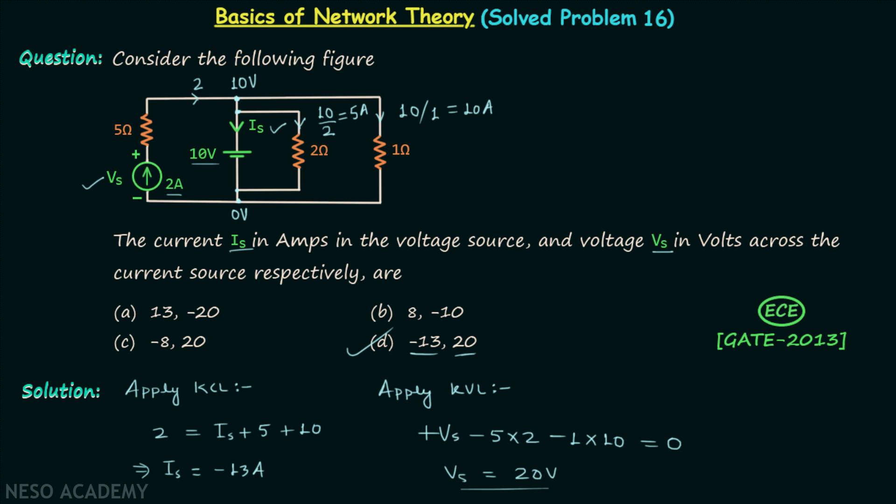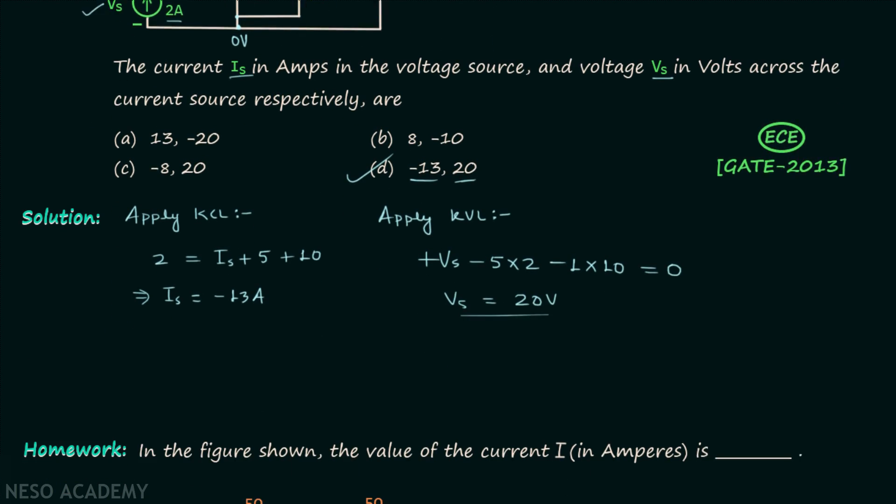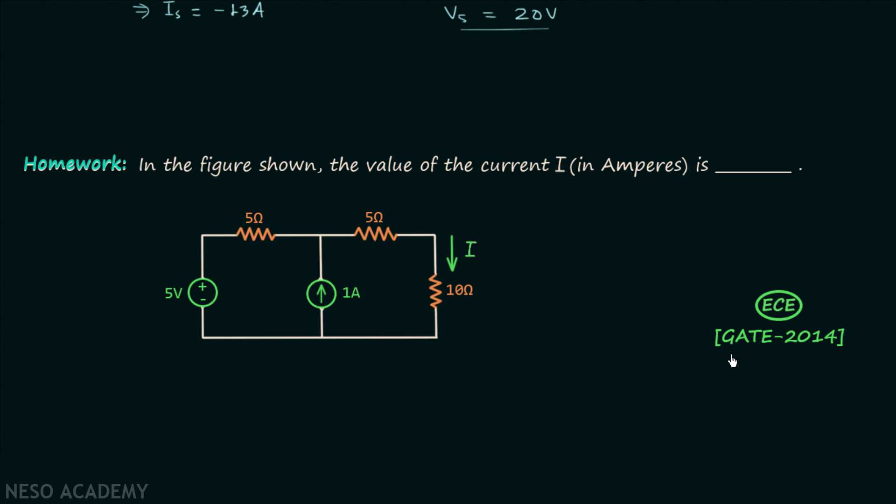Now we will move on to our homework problem which I have taken from gate 2014 ECE paper. In this problem you are required to calculate the value of current I in amperes, and current I is the current in this branch. So try to solve the problem and once you have your answer, post it in comment section.